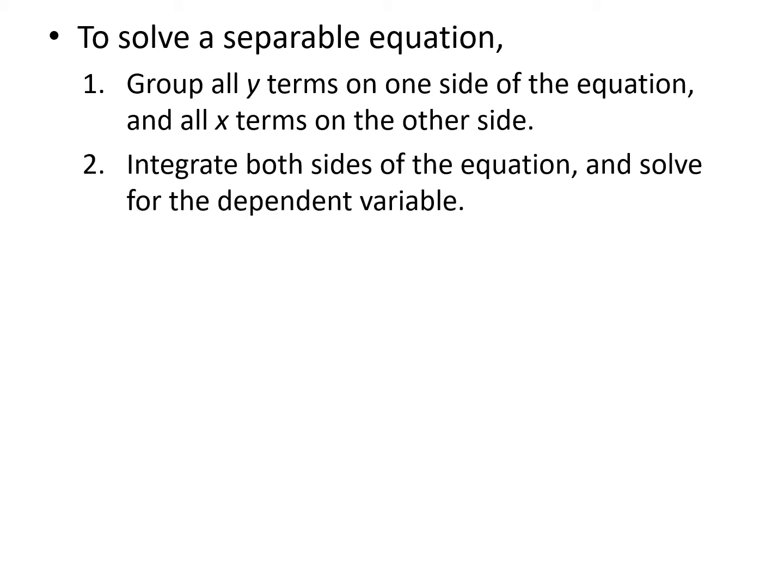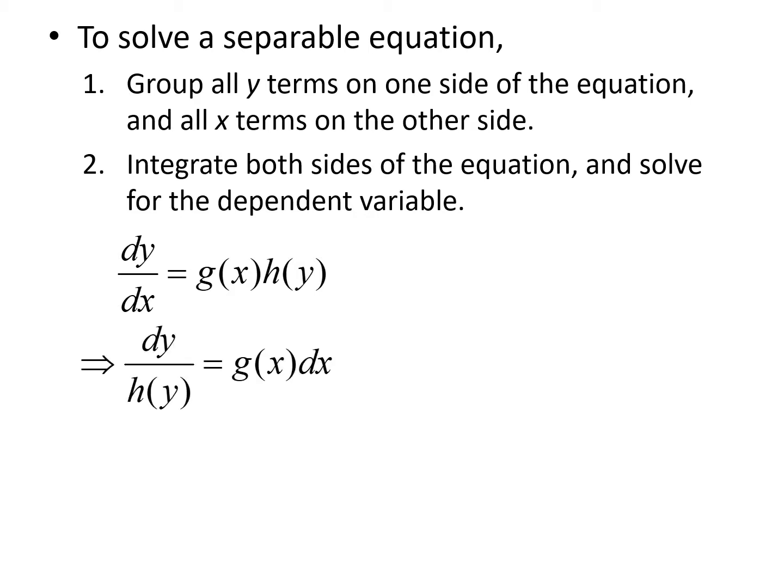After you have all of your terms separated — all of your x's with dx on one side and all of your y's with dy on the other — then you're going to integrate both sides of the equation and solve for your dependent variable. So generically, our separable equation takes the form dy/dx equals g of x times h of y. We separate variables by multiplying dx to the right hand side and dividing h of y to the left, giving us dy over h of y equals g of x dx. Then we integrate both sides and solve the resulting expression for y to get our explicit solution.